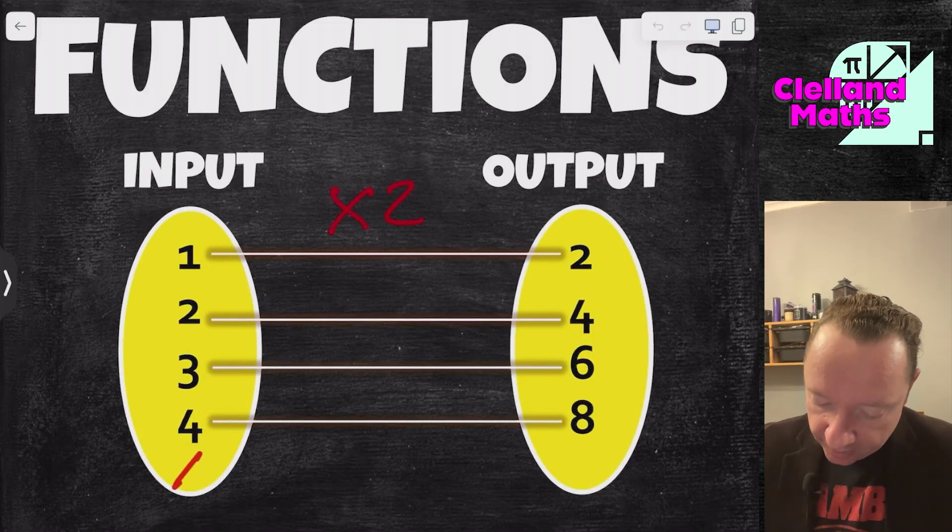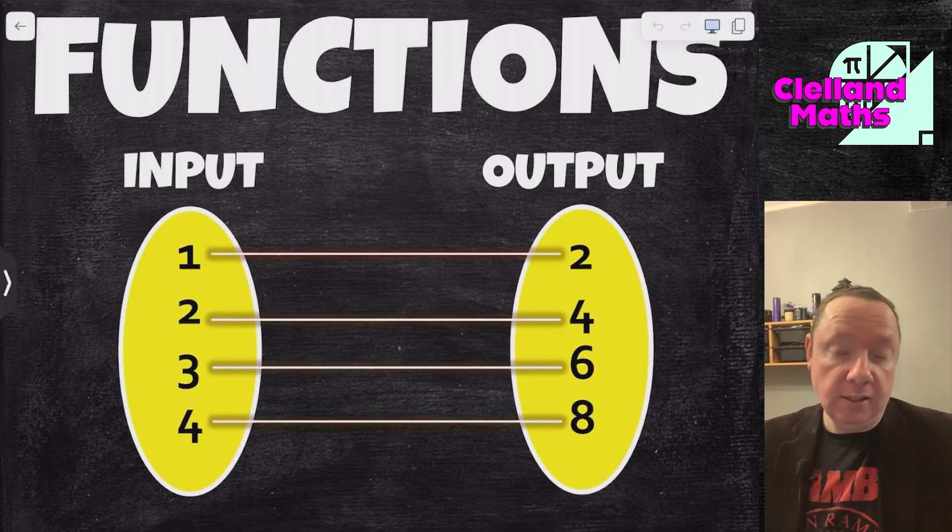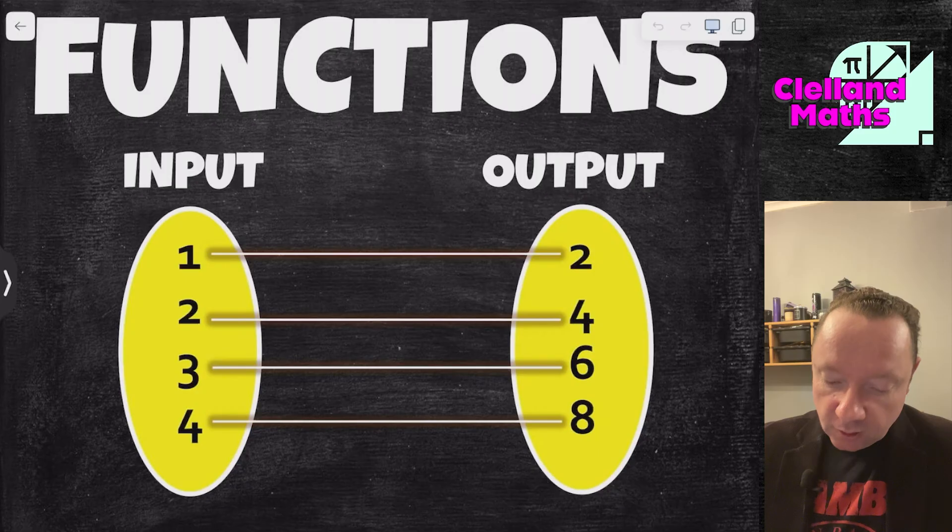So we could say that if I had an x here, this would be 2x. And that is exactly what a function is. It takes an input and gives an output. Now, in the context of National 5 Maths, we use something called function notation.